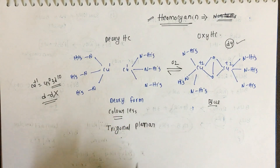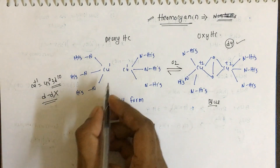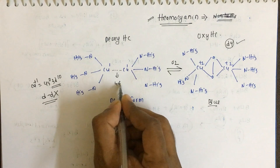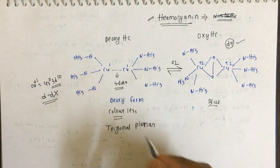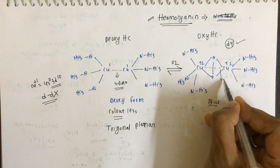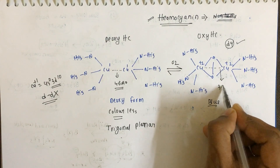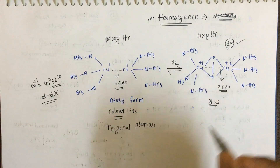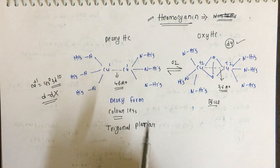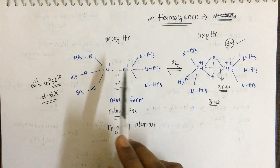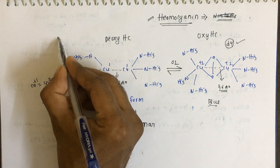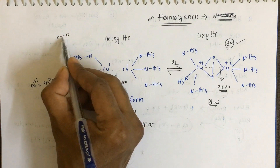Another important thing is the copper-copper distance. In the deoxy form, the copper-copper distance is 4.6 angstroms, whereas in the oxy form the copper-copper distance is 3.6 angstroms — so it reduces by almost one angstrom.